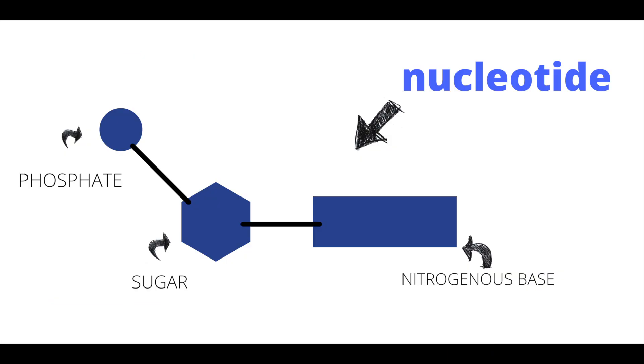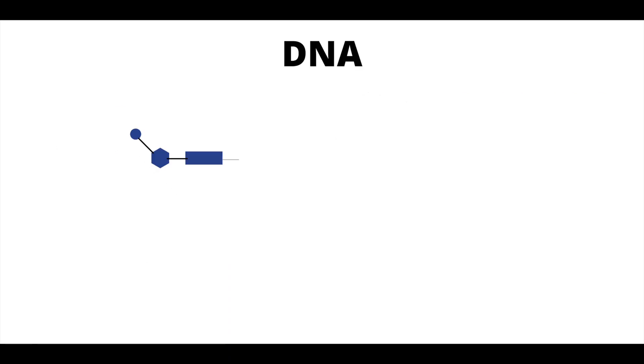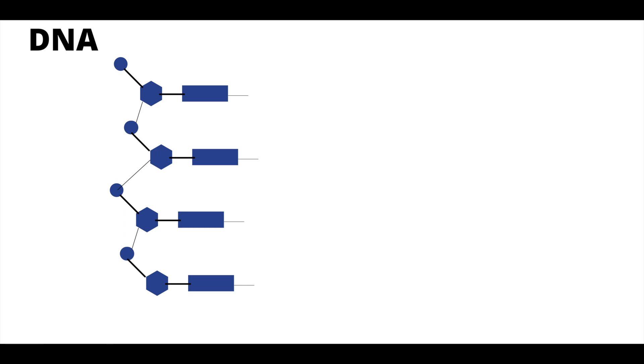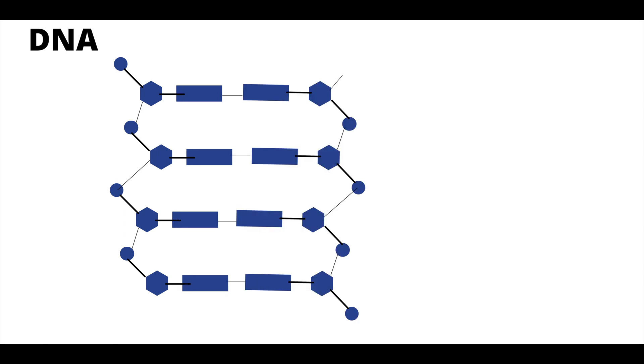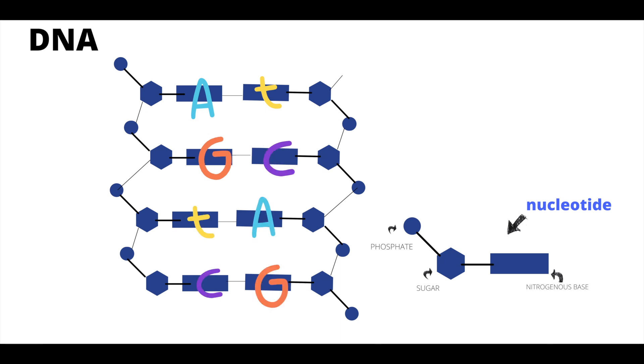A nucleotide is made of a phosphate, a sugar, and a nitrogenous base. DNA comes in a double strand and runs anti-parallel, meaning the strands are parallel but go in opposite directions. Phosphates and sugars make up the outside of DNA, and nitrogenous bases are on the inside.